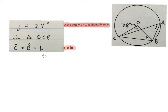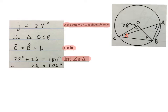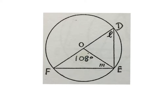Then I go into triangle OCB. The angle at C equals the angle at B, and we call both of them K, because of those two radii. We write 78 plus 2K equals 180 — interior angles of a triangle. Then we minus 78 and divide by 2, which gives us K equals 51 degrees.